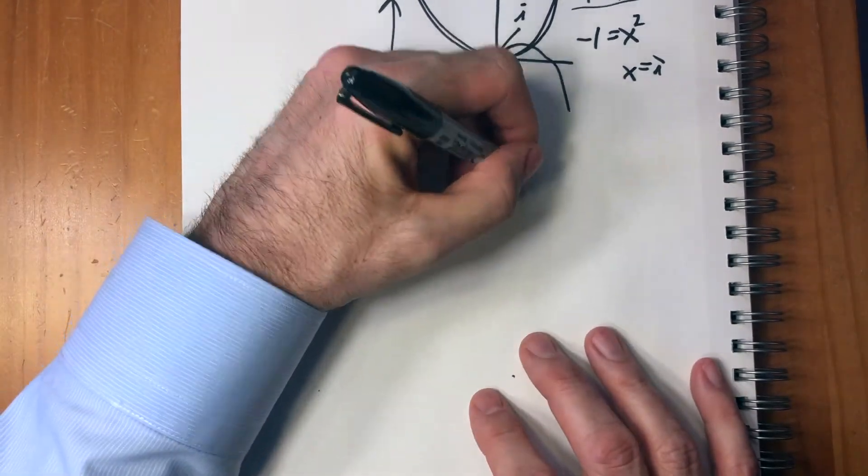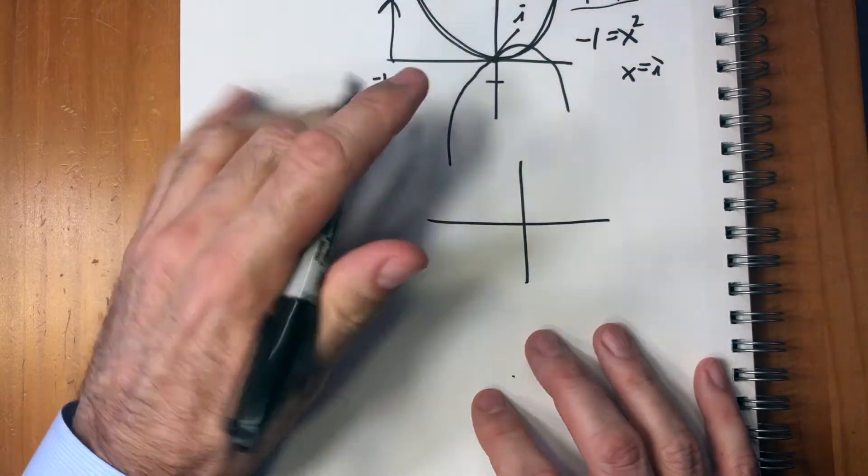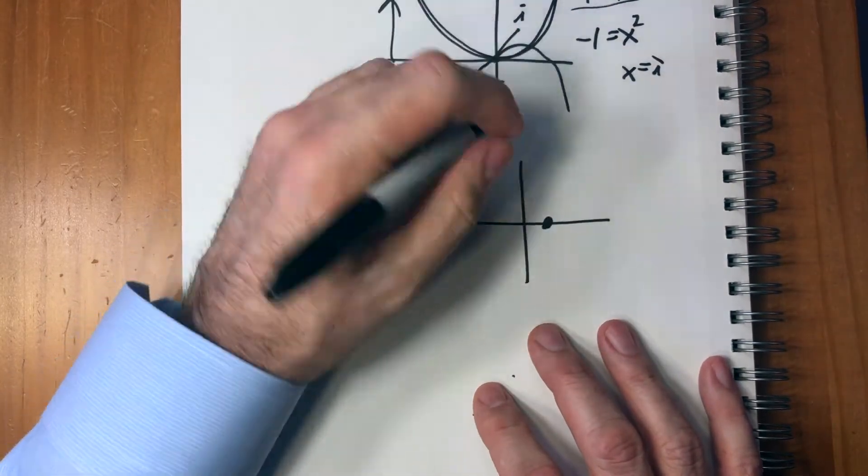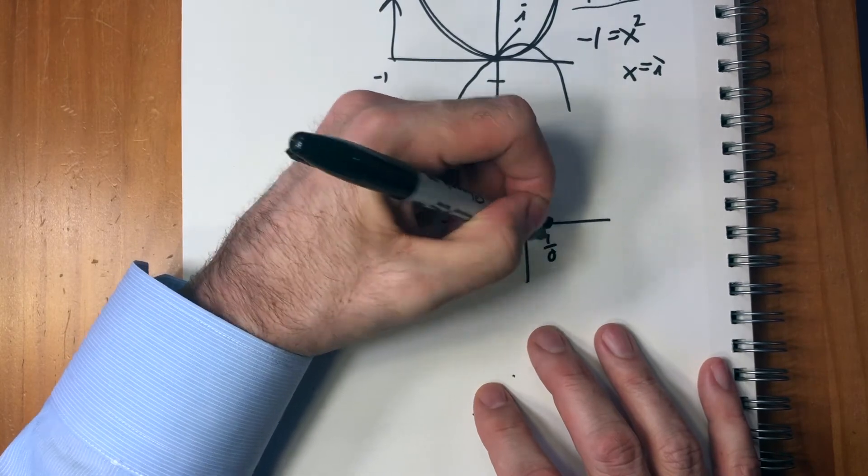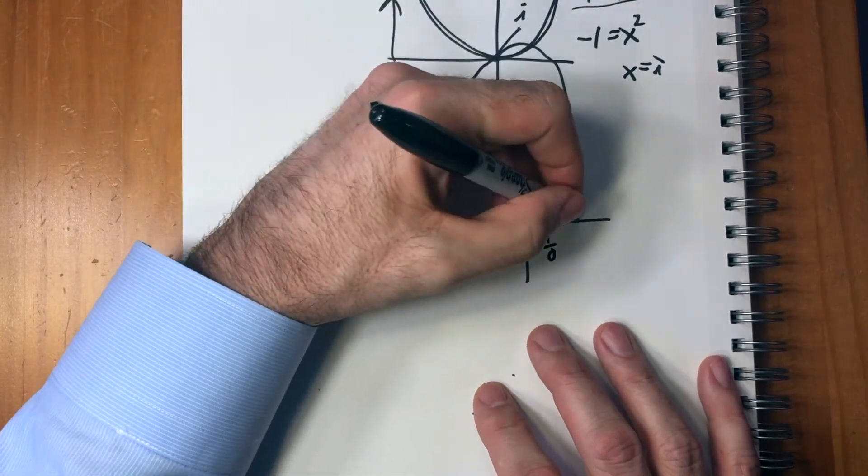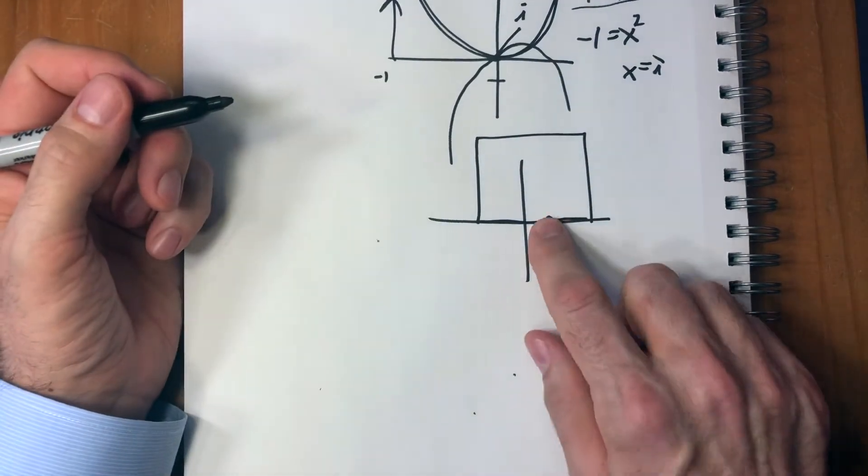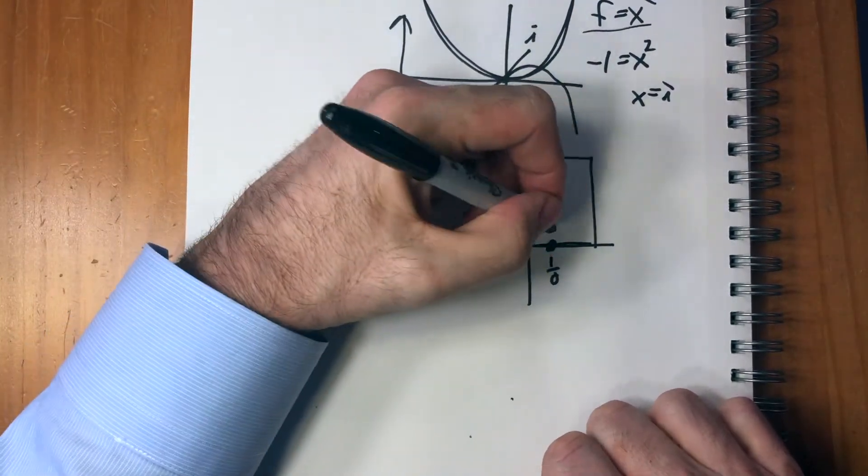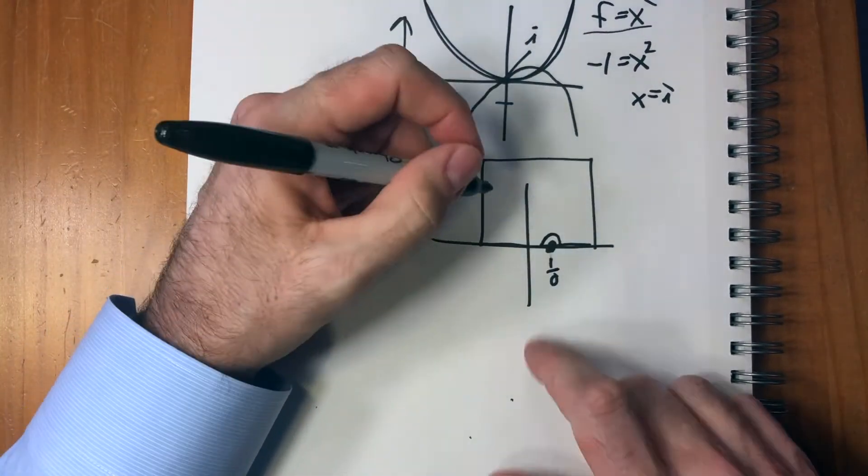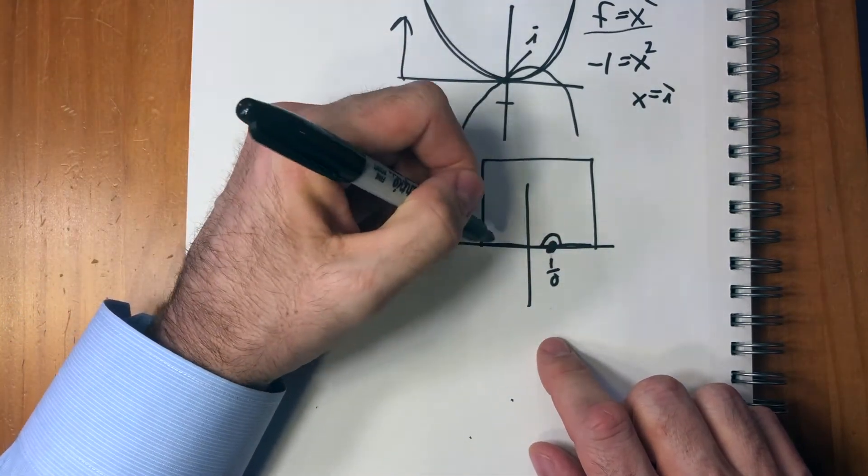That's what complex integration is all about because let's say that we have some kind of a function and it has this point right here that goes to infinity. It blows up for some reason. It's one over zero right there. Well, if you're trying to integrate along here, you can't because that point is infinity, you're not going to get an answer.